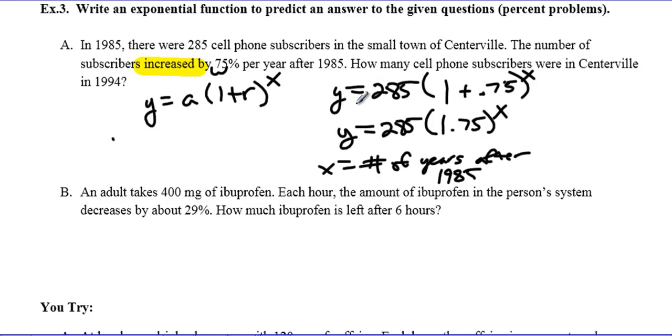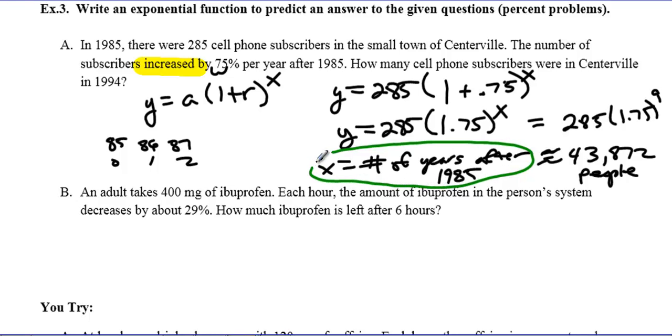If I want to predict how many people have cell phones in 1994, we've got to think 85 is 0, so 86 is 1, 87 is 2, and so on, all the way up to 1994. If you do that, that'll get you to 9 years. So I have 285 times 1.75 to the 9th power, and that's going to give me an approximate number of 43,872 people. Our y is approximately equal to 43,872 people with cell phones after 9 years of this type of growth.